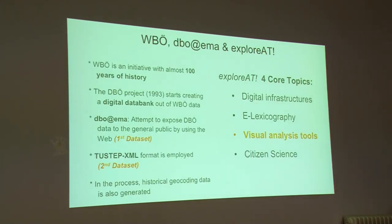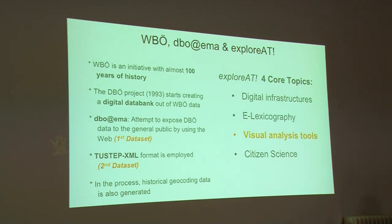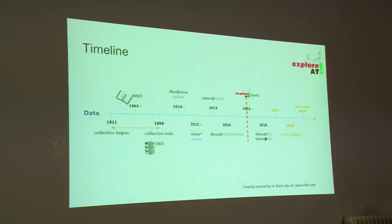In our case, we have worked with the WBO dictionary, which includes information about the Bavarian dialects from the Austro-Hungarian Empire. In 1993 it turned into DBO, which is an online approach to the dictionary that lets people access it — and that was our first dataset. We were then provided with another dataset in XML format, and we also have geographical information from the region of our project. This is more or less the canvas of our project: we are trying to develop a system that lets us better explore what is inside the datasets we are working with.